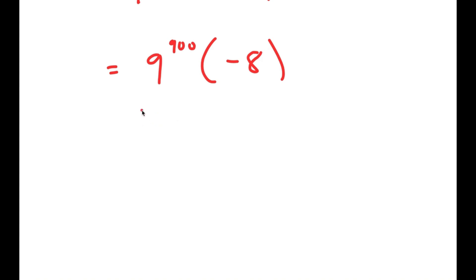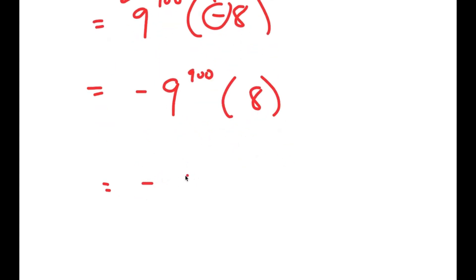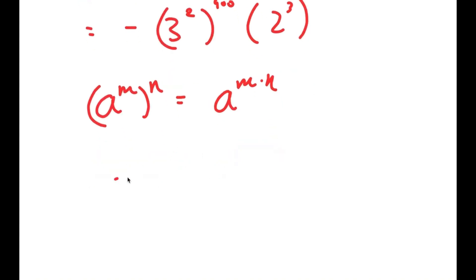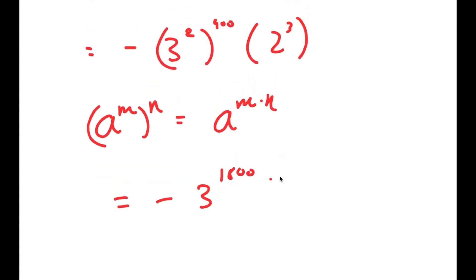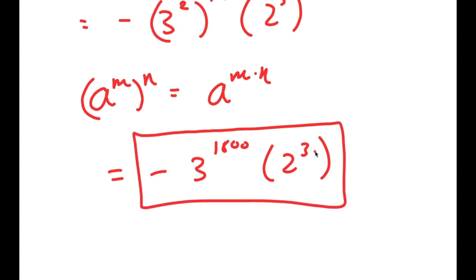From here I said I was going to simplify as much as possible, and we can't get the exact value because 9 to the power of 900 is such a big number. However, we can get the simplified form. I'm going to move the negative sign to the front, so I get negative 9 to the power of 900 times 8. This gives me negative 3 squared to the power of 900 times 2 to the power of 3. Using the property that a to the power of m to the power of n equals a to the power of m times n, I get negative 3 to the power of 1800 times 2 to the power of 3. This is my final solution.